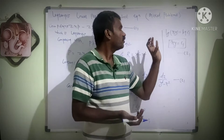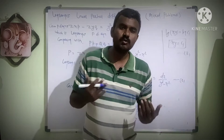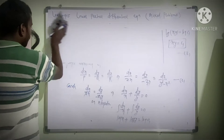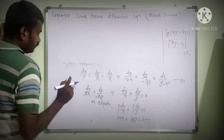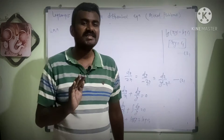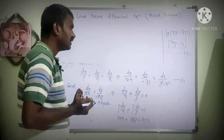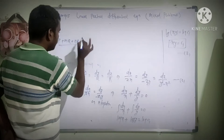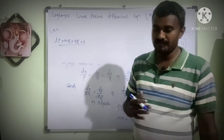So the first part is done. Now we will find the second solution using the method of multipliers. We will use the auxiliary equation and find suitable multipliers. In the multiplier method, if three multipliers are L, M, and N, then the condition is: L times P plus M times Q plus N times R must equal 0. We find these by trial and error, using the known values of P, Q, and R.